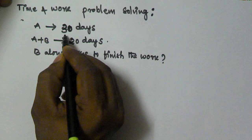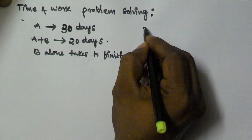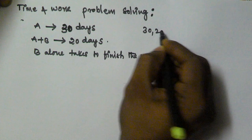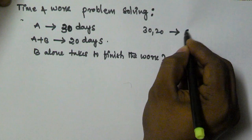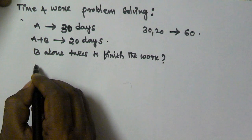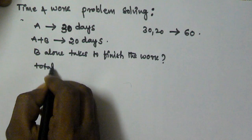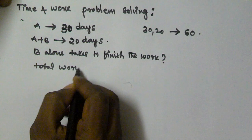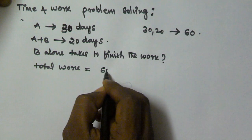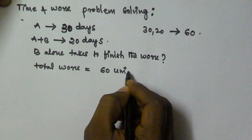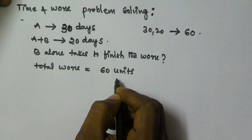So take the LCM of 30 and 20. What is the LCM of 30 and 20? It is going to be 60. So let us take the total work is equal to 60 units.